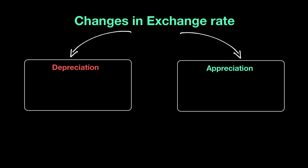Those are the two situations we need to look at in more detail — what happens when the currency depreciates against the rest of the world or against any one particular currency, and what happens when the currency appreciates. Now when we talk about depreciation, let me give you an example. Let's say today is the 1st of January and today if we trade in 1 pound we get $1.26.